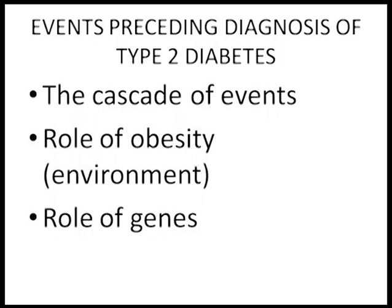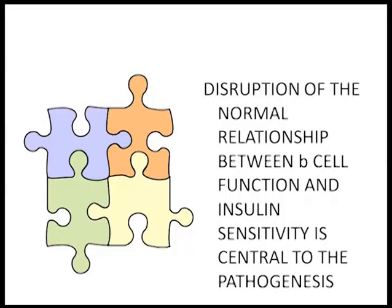By how many years can we receive the diagnosis of type 2 diabetes? What we have here is the cascade of events that happens — the role of obesity and environment and the role of genes. We are going to discuss this in brief before we go on to decide what is more dominant. As we all know, disruption of the normal relationship between beta cell function and insulin sensitivity is central to the pathogenesis.